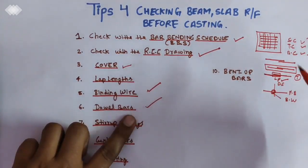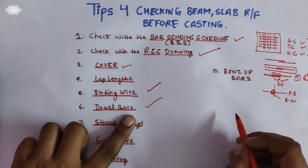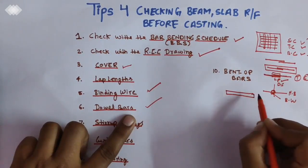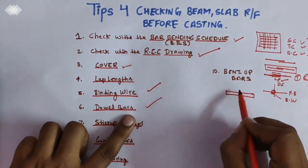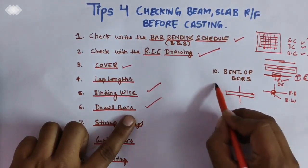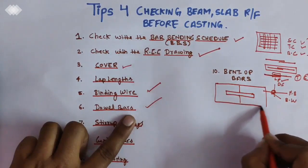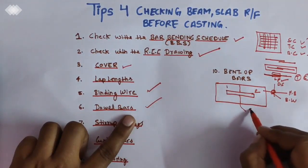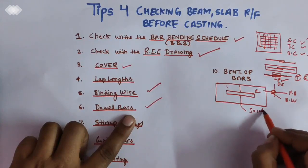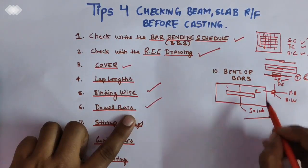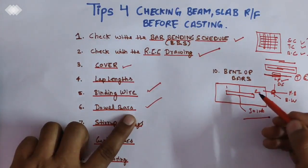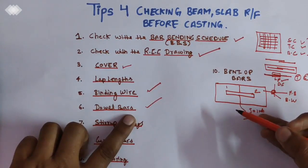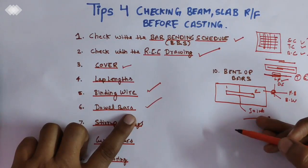The sixth tip is the double bars. For example, where there is a joint in the slab — this is slab 1, this is slab 2, and this is a joint — we provide double bars here. This is to transfer load without resisting the horizontal movement. Here we provide double bars.